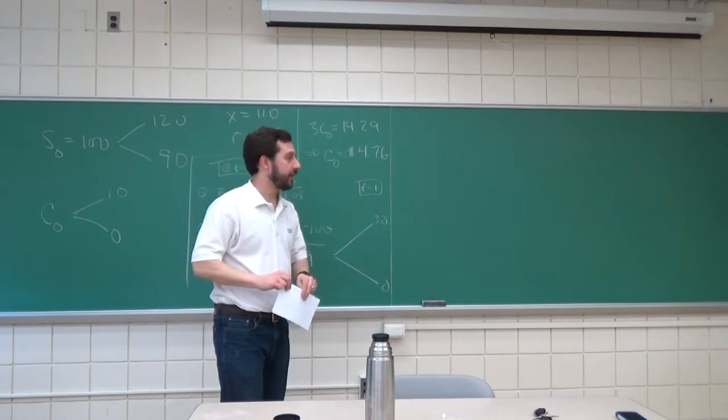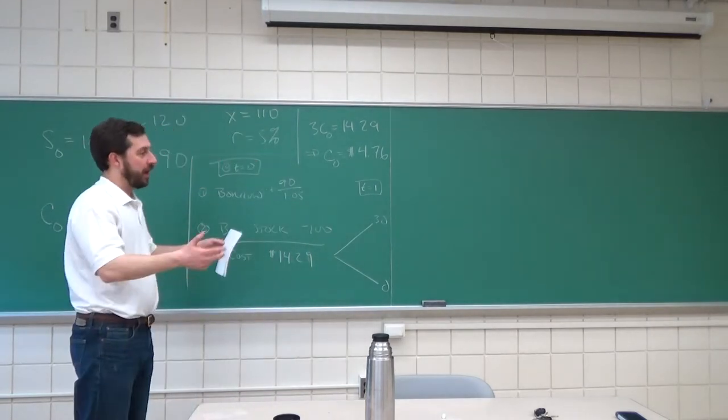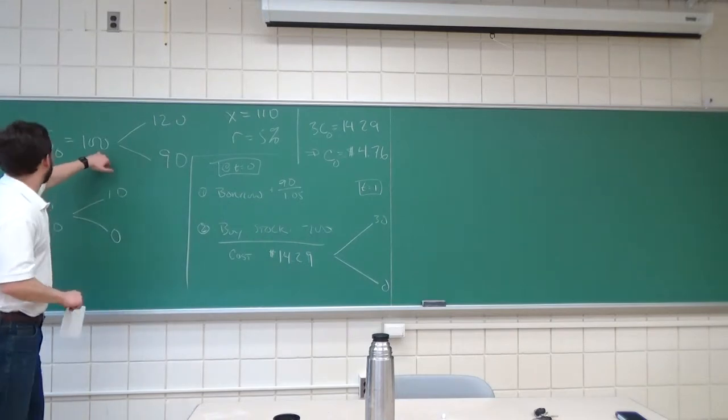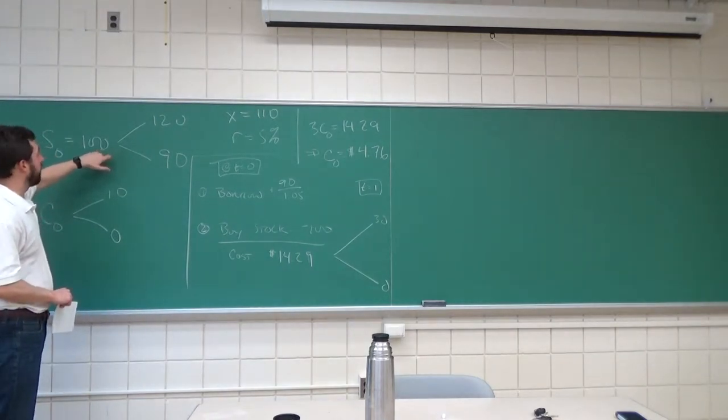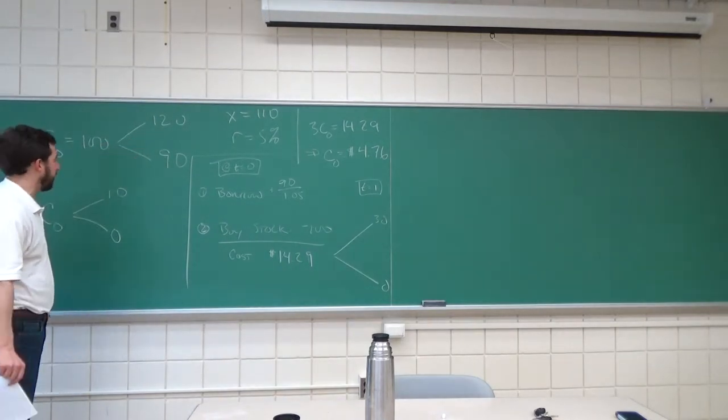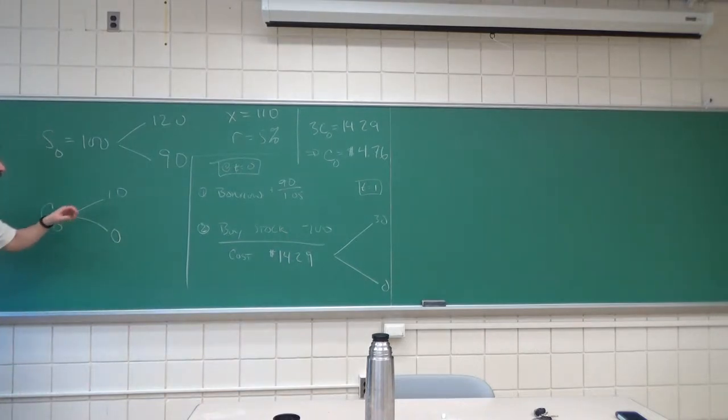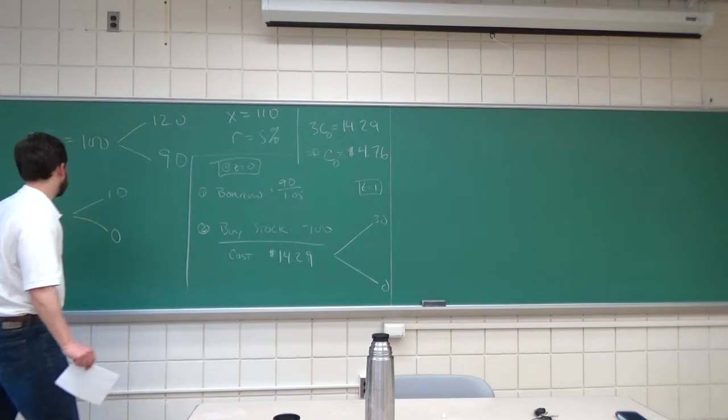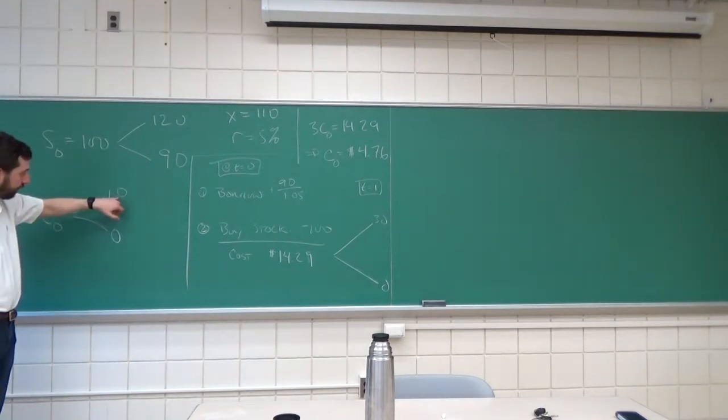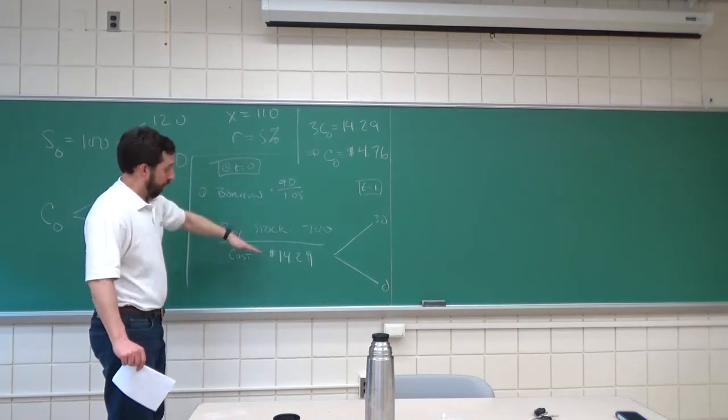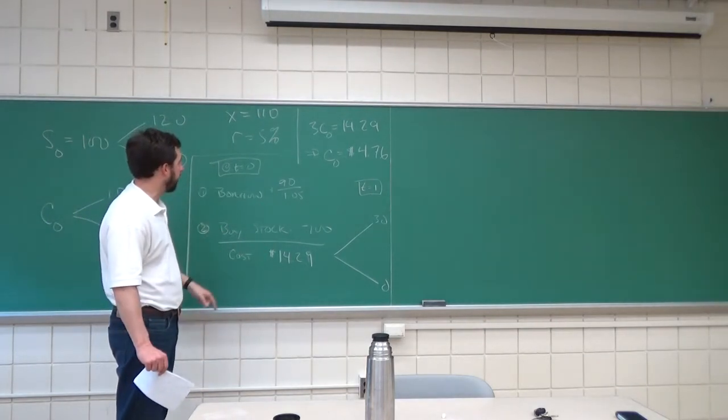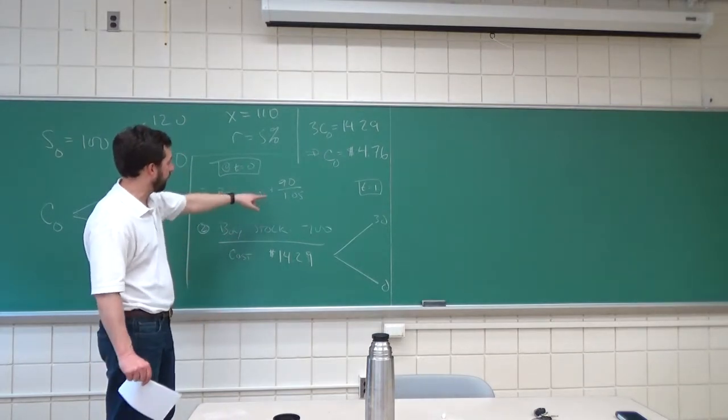Okay, earlier we looked at pricing an option in a binomial setting, a call option. The stock price today was $100, it will either be $120 or $90 in time 1, so we have a call with a strike price of $110, risk-free rate is 5%, so at time 1 the call is either worth $10 or $0. We put this portfolio together, borrowing $90 at time 0 at the risk-free rate 5%, also buying stock.